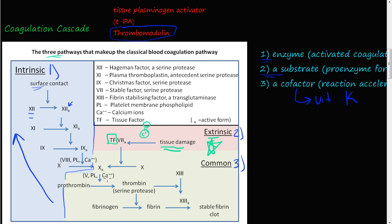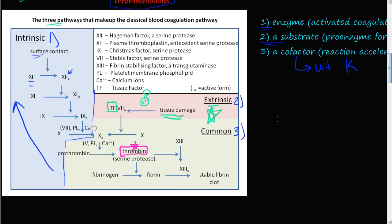That process happens with calcium. Once activated factor 10 is formed, it will combine with prothrombin to convert it to thrombin. Thrombin is the biggest player in the whole coagulation cascade. After being activated, thrombin circulates in the blood and then converts fibrinogen — a soluble component — into fibrin. Fibrin becomes insoluble, meaning water cannot break it up, making it a more permanent structure.